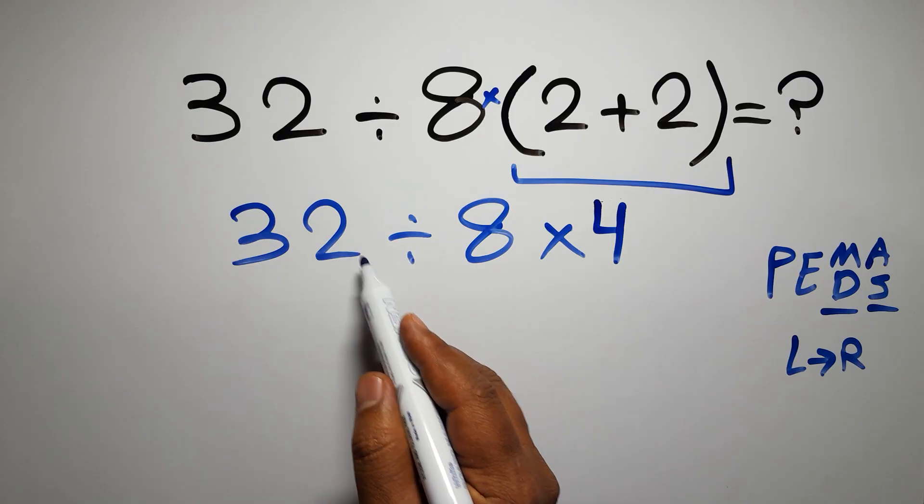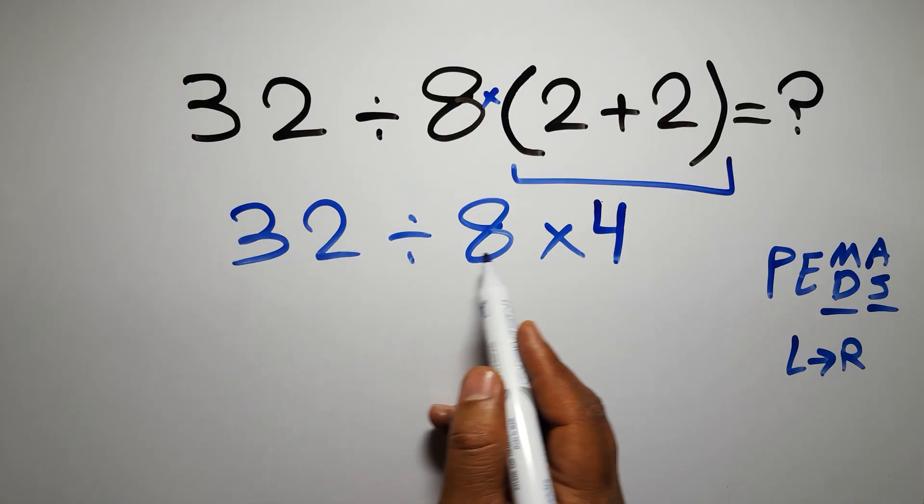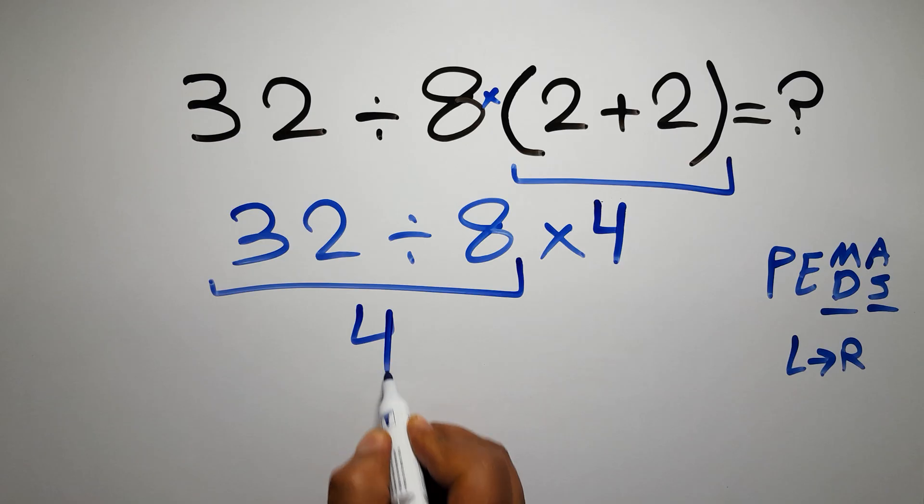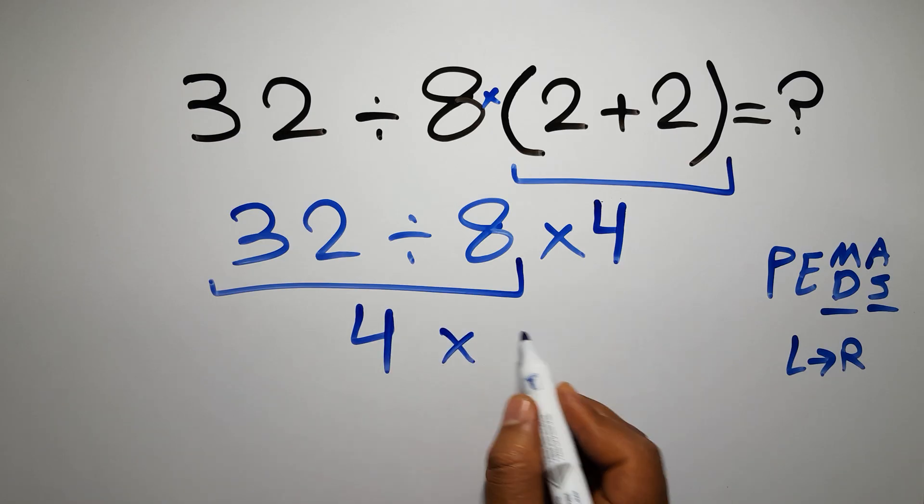So here first we have to do this division. 32 divided by 8 is just 4. So 4 times 4, which equals 16.